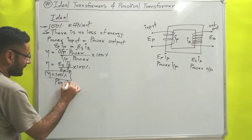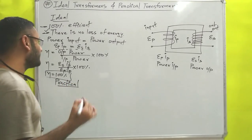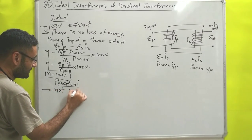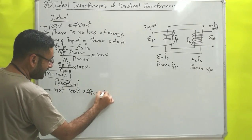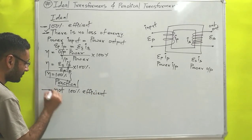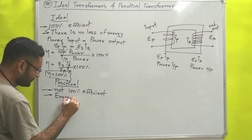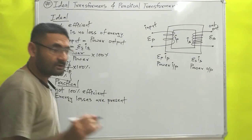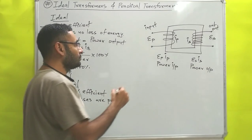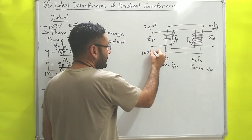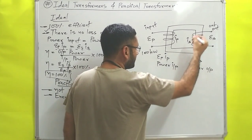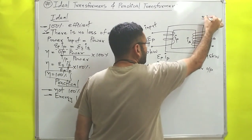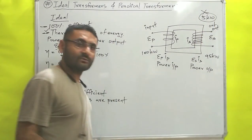Now we'll talk about the practical transformer. A practical transformer is one that is not 100% efficient, because energy losses are present — that means power loss is there. For example, if you supply 100 kilowatts of power on the primary side, then on the secondary side only 95 kilowatts of power can be transferred; the remaining 5 kilowatts is lost and wasted.